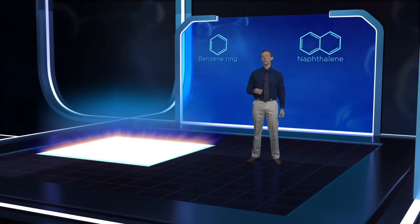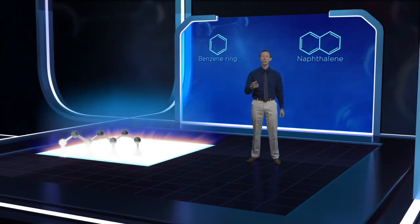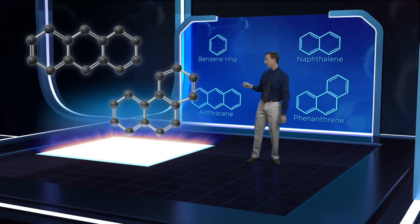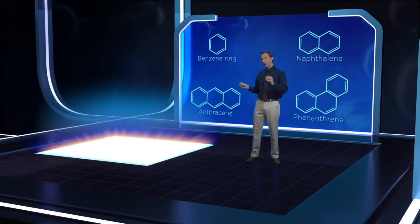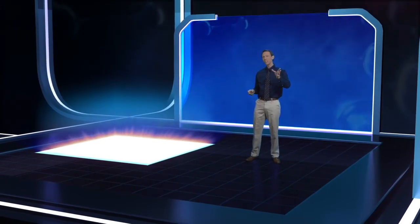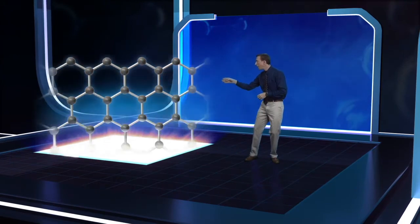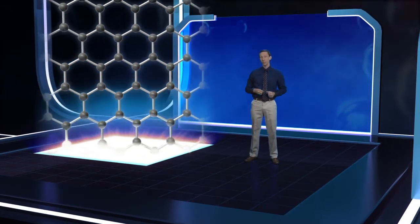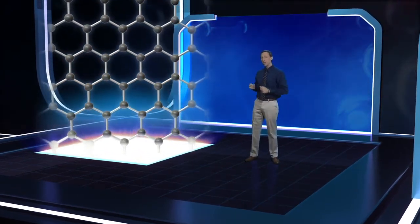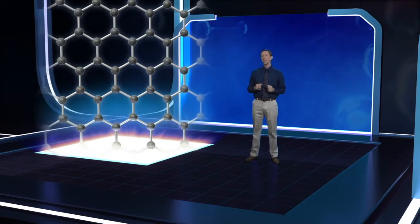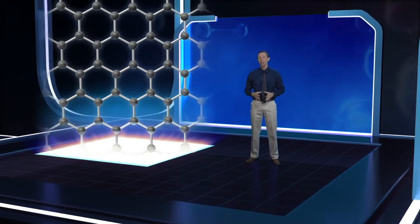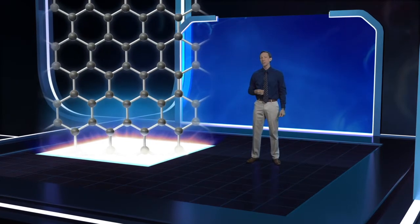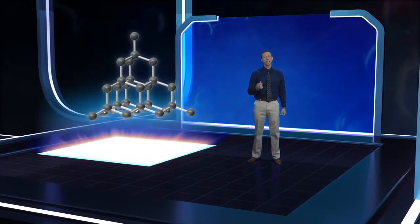Now for planar compounds, this trend continues through tricyclics like anthracene and phenanthrene, all the way up to graphite, which is essentially a never-ending sheet of fully fused benzene rings. This allotrope of carbon benefits from such significant resonance stabilization that at standard temperatures and pressures, it's even more stable than diamond.